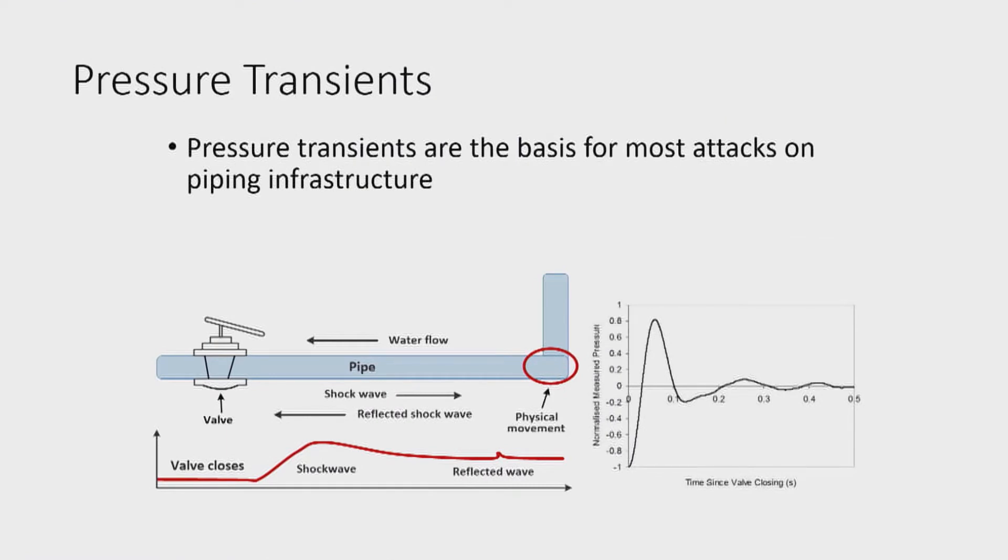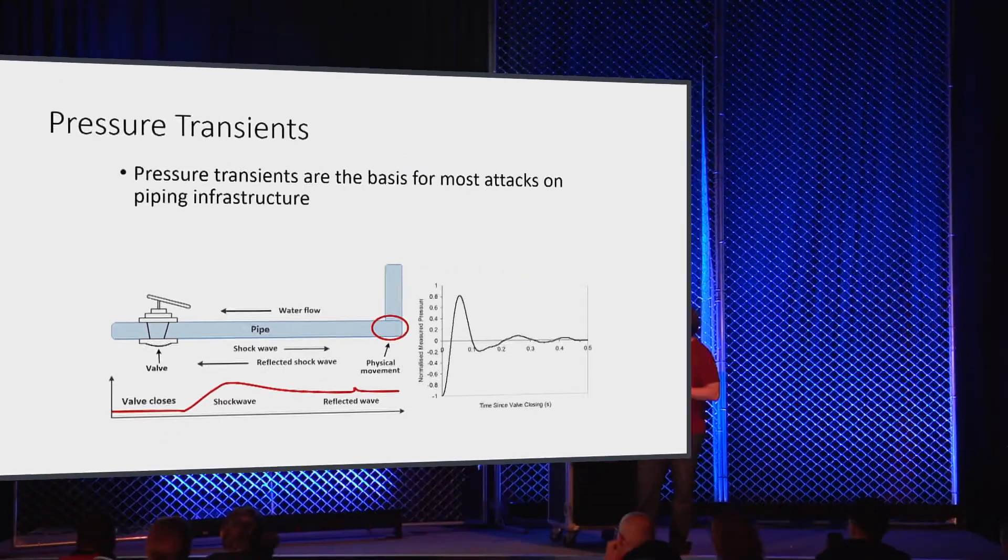So pressure transients are the basis for most attacks on piping infrastructure. Like here, this is a presentation I gave earlier, you can read more about it, where you have a valve and you basically bounce a pressure wave back and forth between the valve and someplace else, and the pressure wave gets bigger and bigger and bigger as you bounce it back and forth.